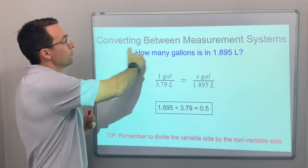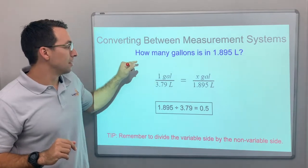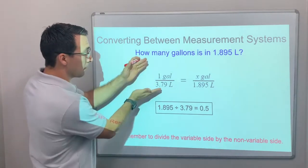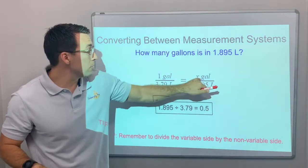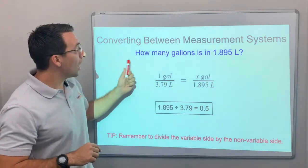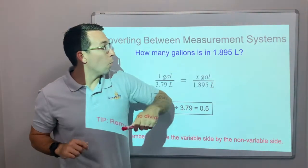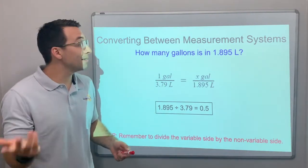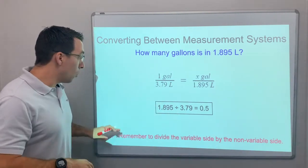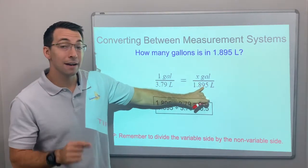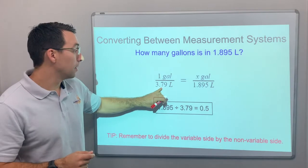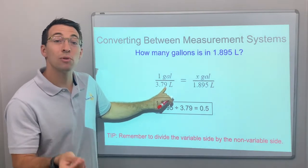Converting between measurement systems. This is a proportion because we have one ratio and a second ratio that are equal, but we don't know this variable. How many gallons is in 1.895 liters? If we use our calculator, we can divide 1.895 divided by 3.79, and that will give us the scale factor.